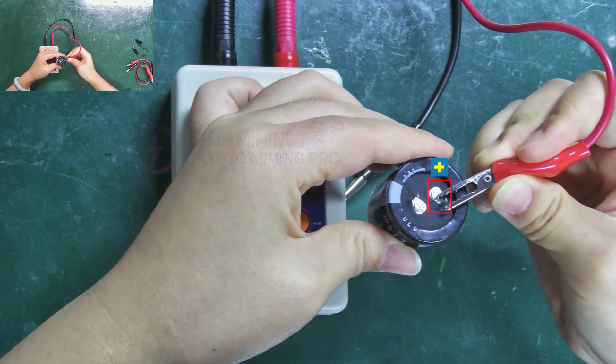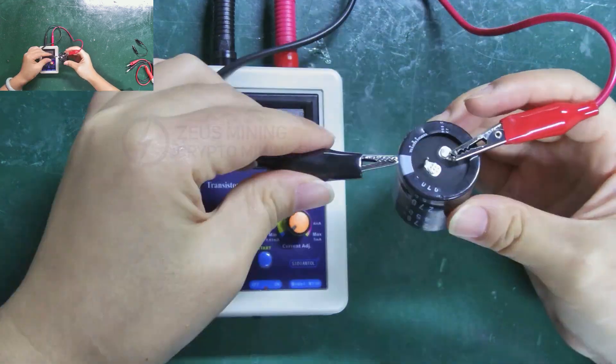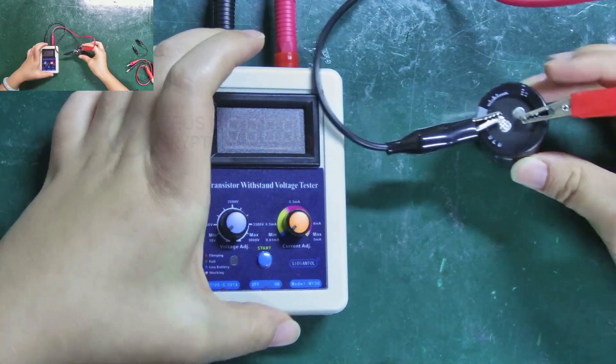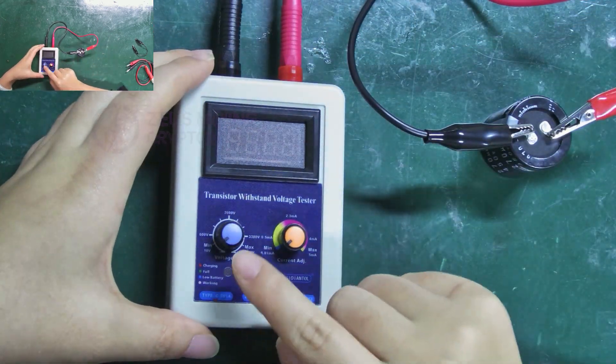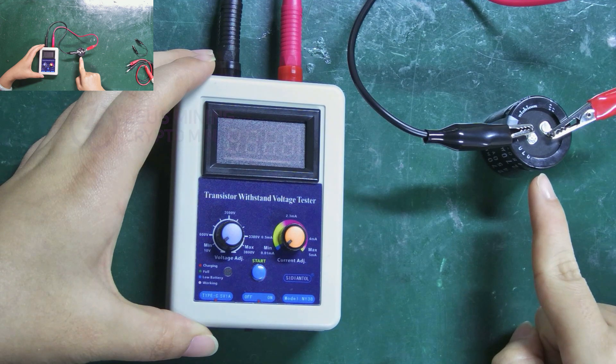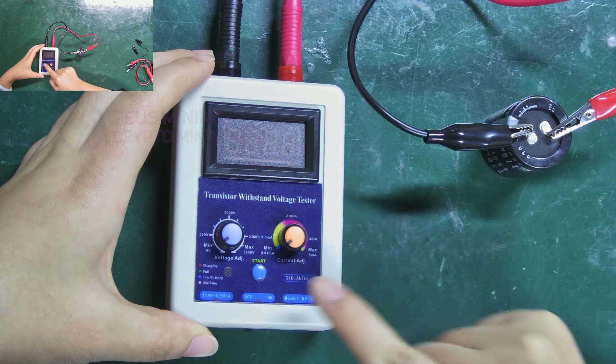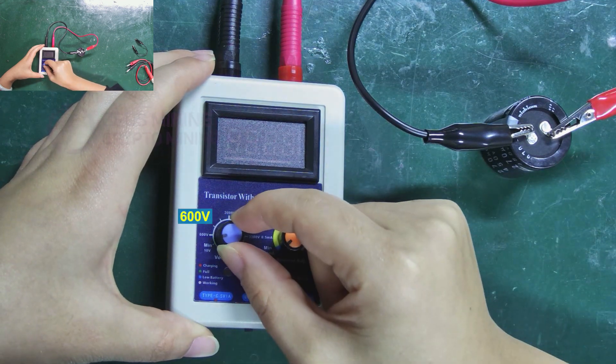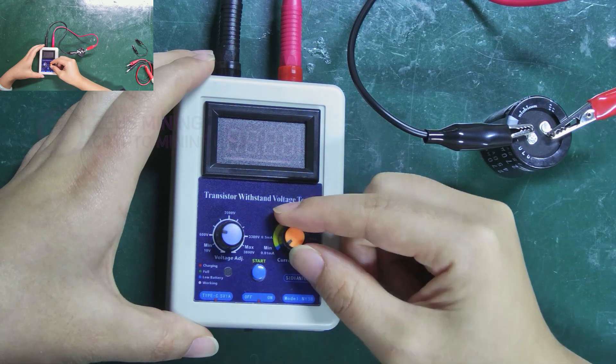Attach the red clip to the positive pole and the black clip to the negative pole. Once connected, set the voltage. Since its withstand voltage value is 450 volts, we'll adjust it to around 600 volts, with the current set to maximum.